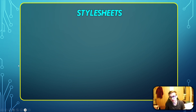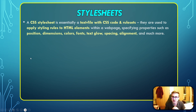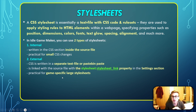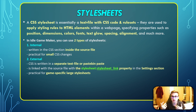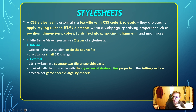Let's learn some very important things we'll be using throughout this entire course — and that is style sheets. A CSS style sheet is essentially a text file or a pastebin paste with CSS code and rule sets, used to apply styling rules to HTML elements, specifying properties such as position, dimensions, colors, fonts, text glow, spacing, alignment, and much more. In Idle Game Maker you can use two types of style sheets. The first is internal — written in the CSS section inside a source file — practical for small CSS changes. The second is external, written in a separate text file or pastebin paste, linked with the source file via the style sheet property in the settings section — practical for game-specific large style sheets.